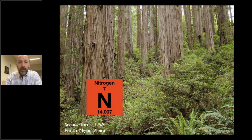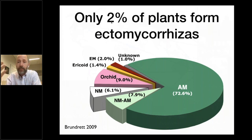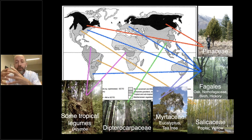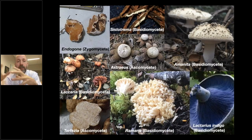Ectomycorrhizae are relatively rare — only about 2% of plant species form them. But that 2% includes the forest dominants of almost the entire globe: all the pine trees of the northern boreal zone, all the Fagales and Nothofagales — that's the oaks and beeches that dominate both the north and southern hemispheres — also eucalyptus, manuka, and kanuka all form ectomycorrhizae. So these are the most important forest trees of the world's ecosystems and also of the forest industry. The fungi involved are really diverse — thousands and thousands of species, crossing three different phyla of fungi.